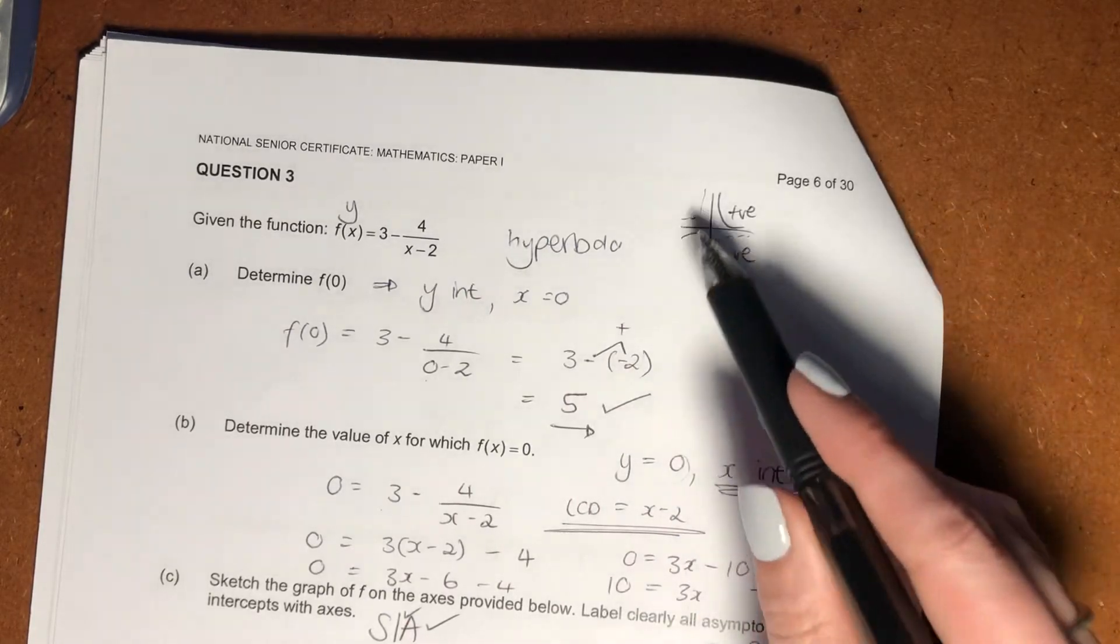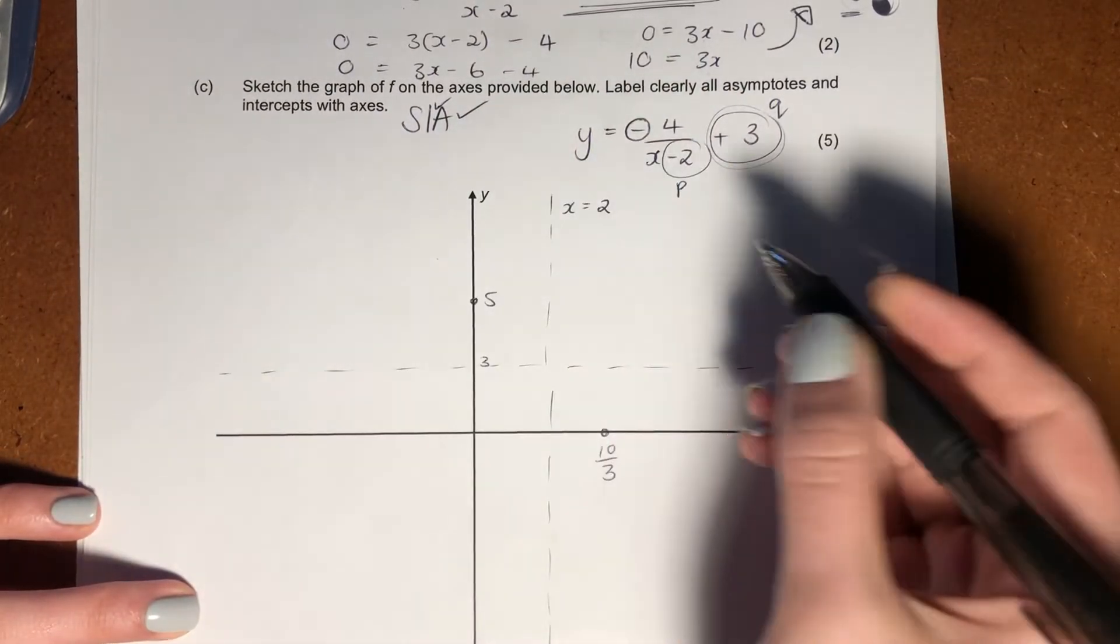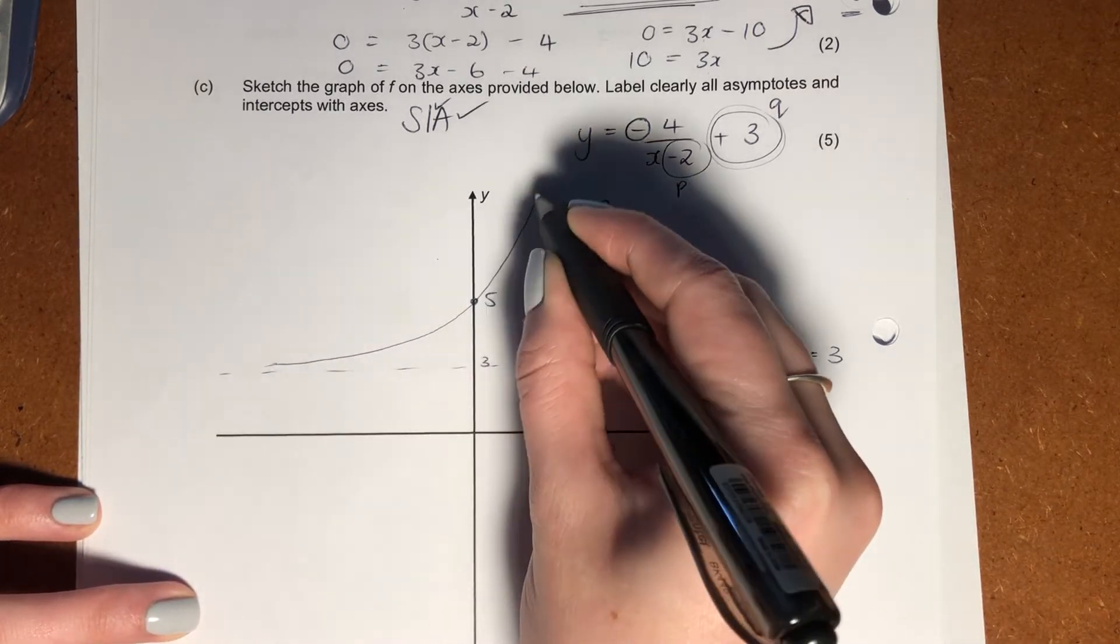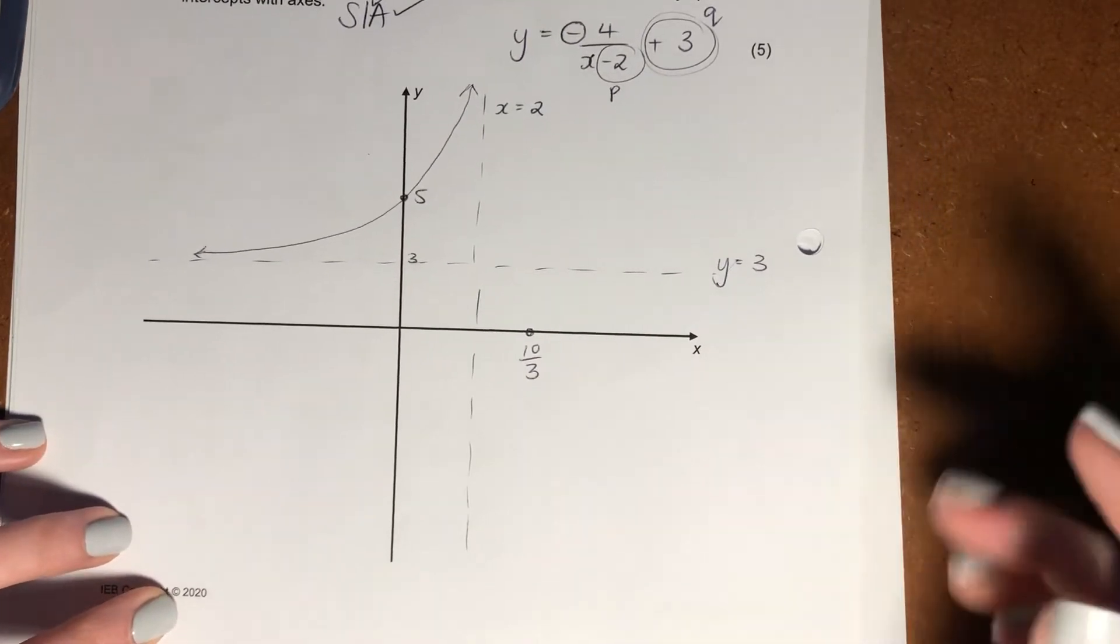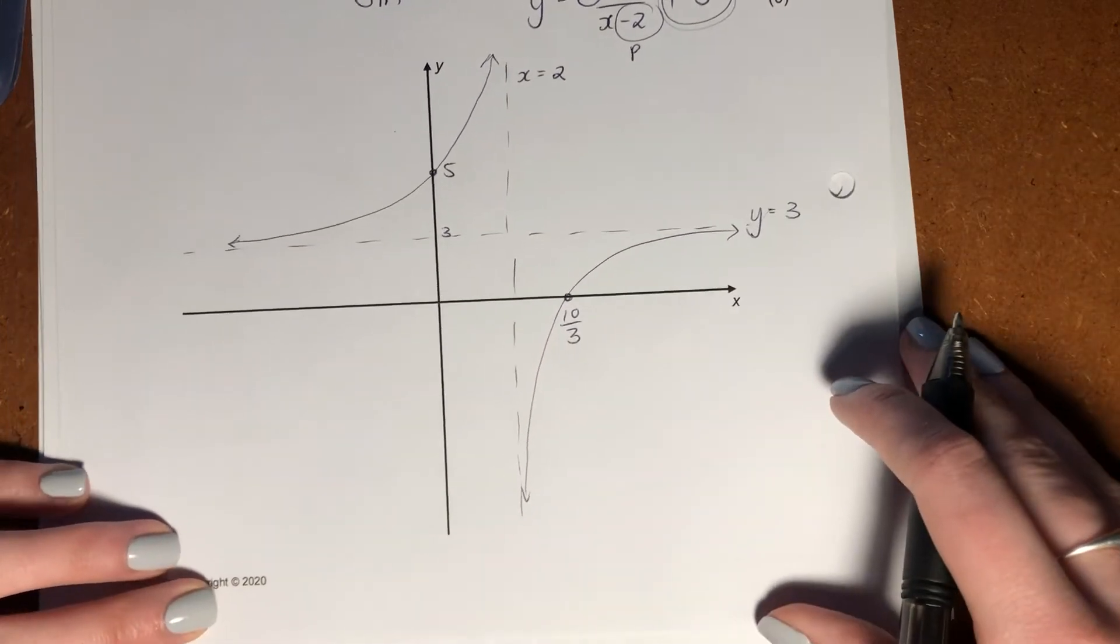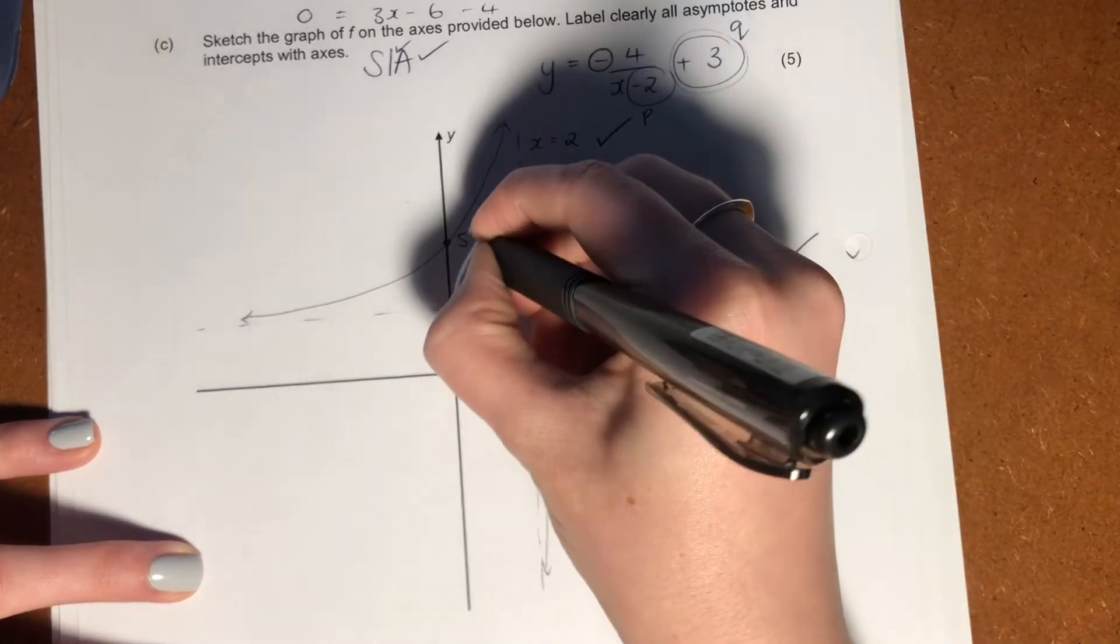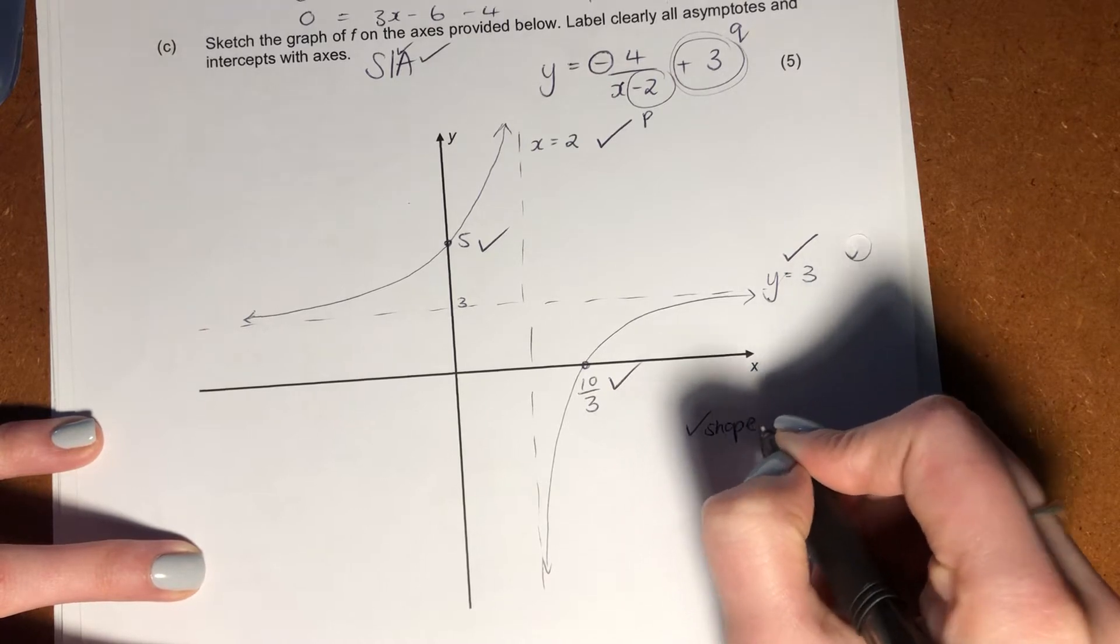Now, what is our shape? I told you that it's in these two quadrants. So it's going to look something like this. Because it said sketch, there is an element of being able to have a little bit of freehand. So there's the one side of the graph. And there is your second side of the graph. So that's done. You get a mark there, you get a mark there, you get a mark there, mark there, and then a mark for your shape.